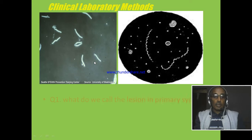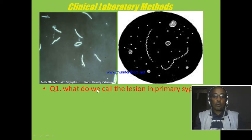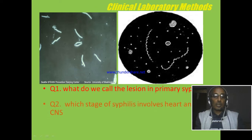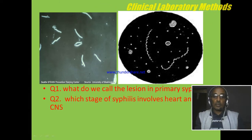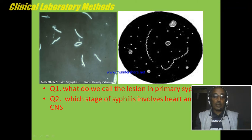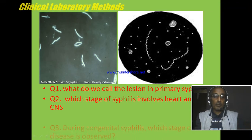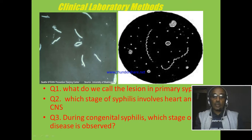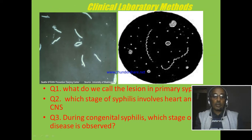Summary questions: What do we call the lesion in primary syphilis? Second: Which stage of syphilis involves the heart and central nervous system? Third: During congenital syphilis, which stage of the disease is observed?